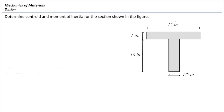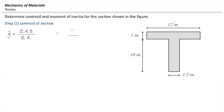Assume we want to determine the centroid for this T-shape and find its distance to the top of the section. This T-shape is made of two rectangles: the top rectangle has a width of 12 inches and height of 1 inch, and the bottom rectangle has a width of half an inch and height of 10 inches. This problem is symmetric about the vertical y-axis, so we don't need to determine x-bar — the centroid passes through the axis of symmetry. We only need to determine y-bar, the distance of the centroid to the top of the section.